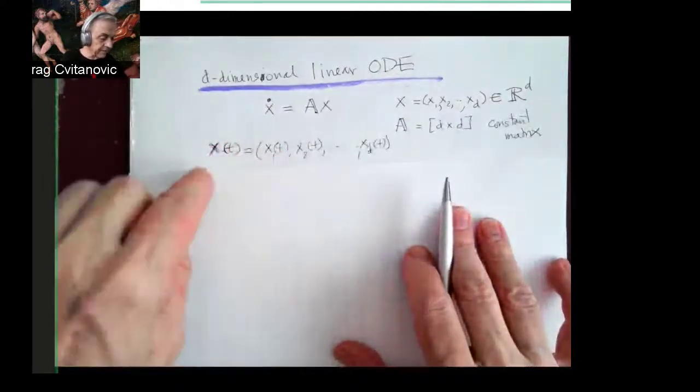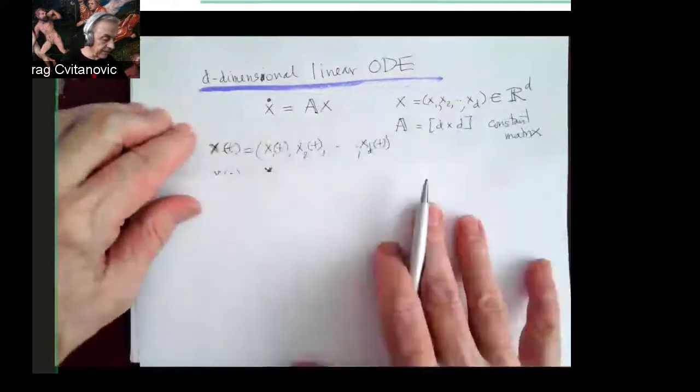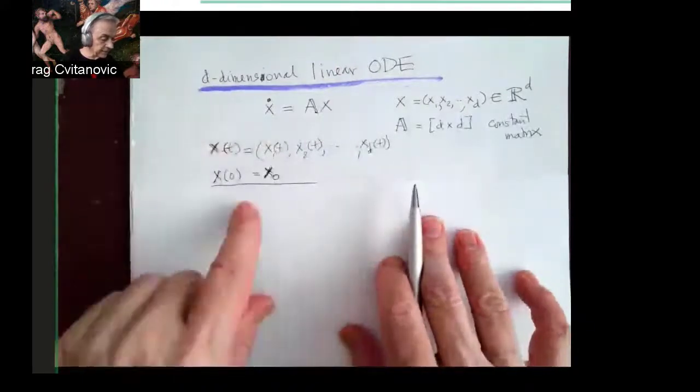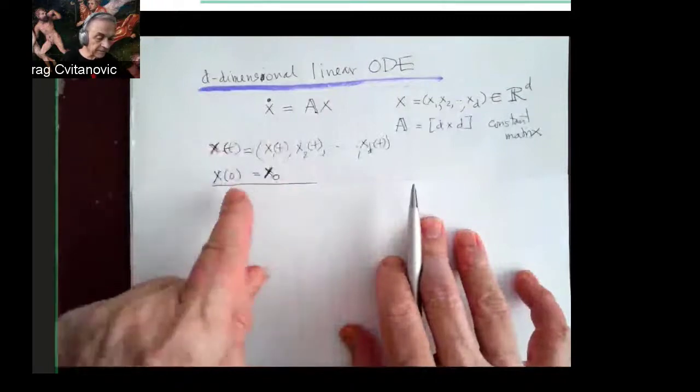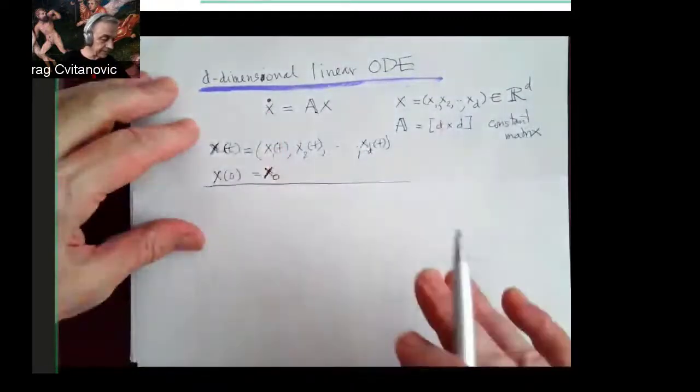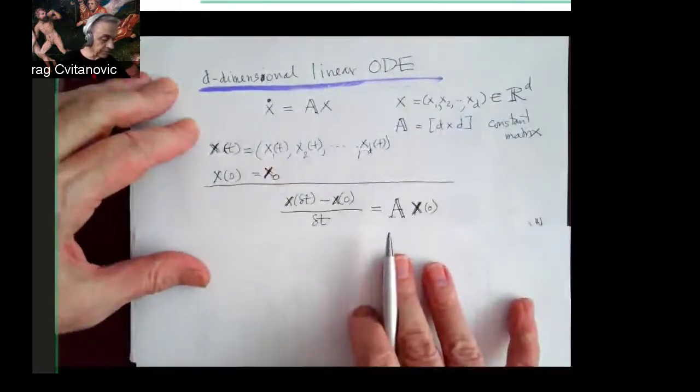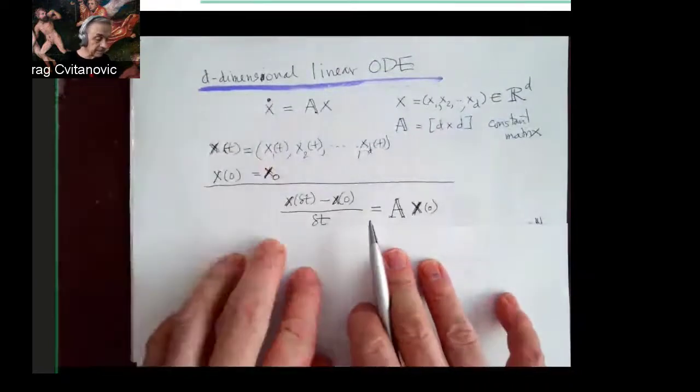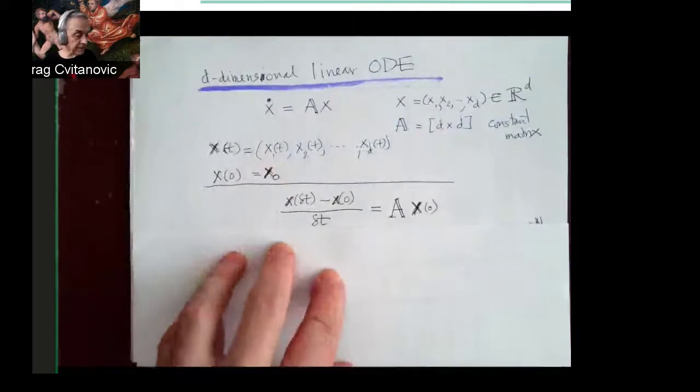This is what X is at time T. It's T values of the thing. And we have initial condition that at initial time, it's some given starting capital or whatever we have distribution of the stocks.